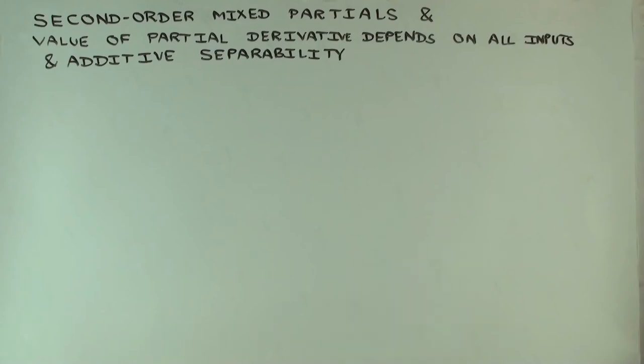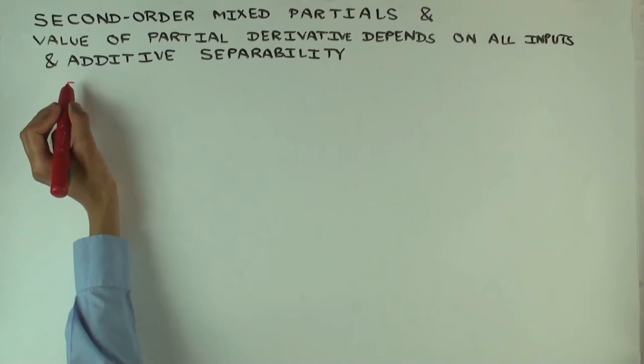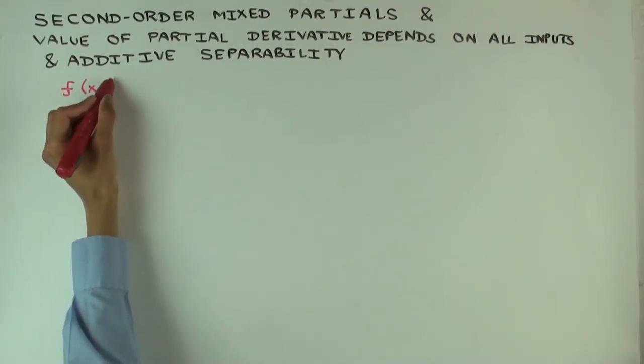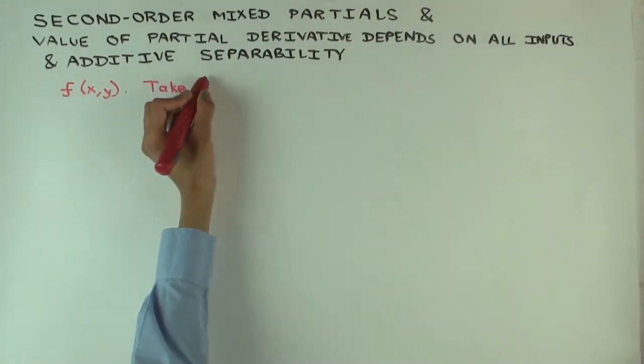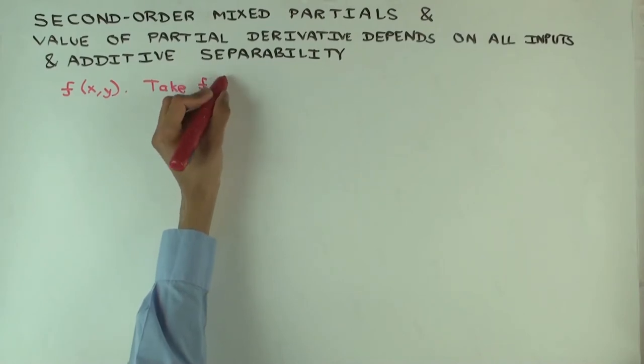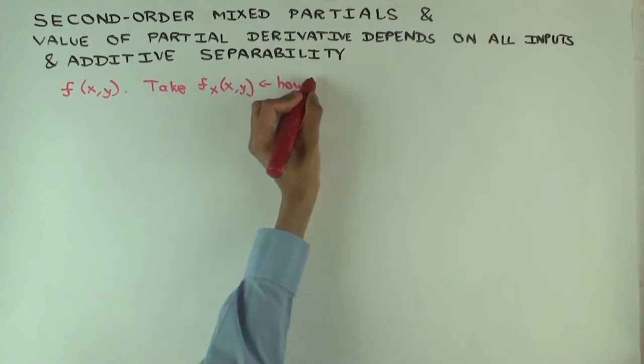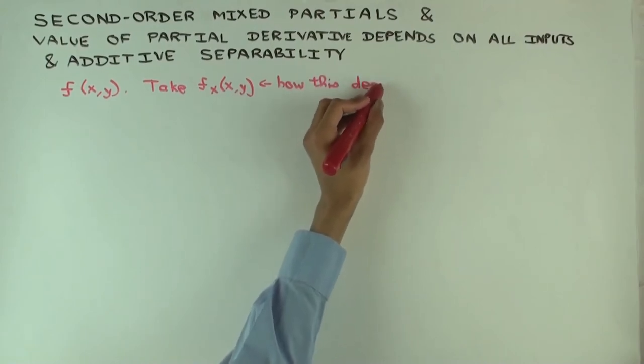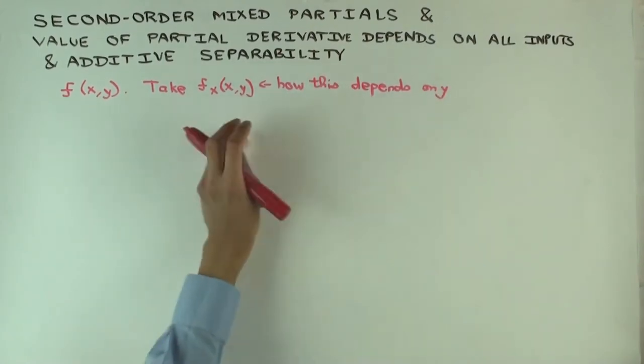The first thing I want to talk about is the second order mixed partial and how that quantifies the extent to which this is true. So let's just do an example with a function of two variables. So we have f of x, y. And we are interested in taking the partial with respect to x and asking, how does this depend on both variables. But in particular, we are interested right now in how this depends on the other variable, on y.